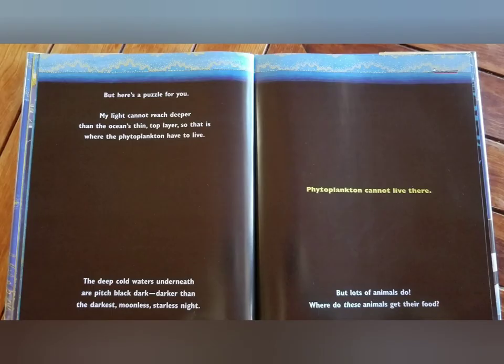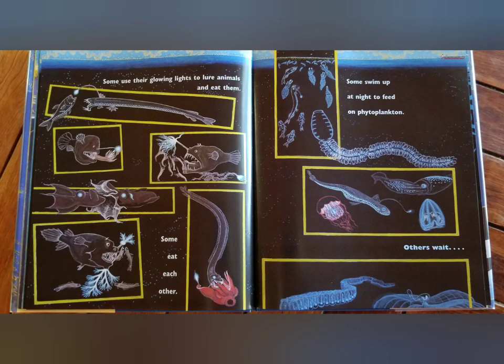But here's a puzzle for you. My light cannot reach deeper than the ocean's thin top layer, so that is where the phytoplankton have to live. The deep, cold waters underneath are pitch black — dark, darker than the darkest moonless, starless nights. Phytoplankton cannot live there. But lots of animals do. Where do these animals get their food? Some use their glowing lights to find animals and eat them. Some eat each other. Some swim up at night to feed on phytoplankton.